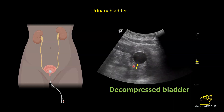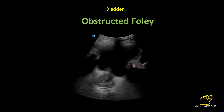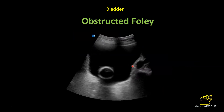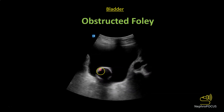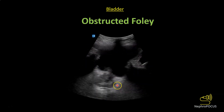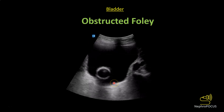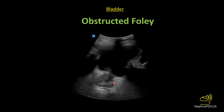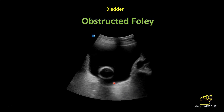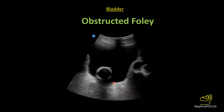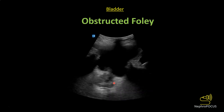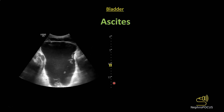Sometimes the Foley catheter is obstructed. In that case, you have the balloon in the bladder but the bladder is still completely distended — that is abnormal. You should flush the Foley catheter. This commonly happens when the patient has hematuria, either due to traumatic Foley insertion or some pre-existing cause.